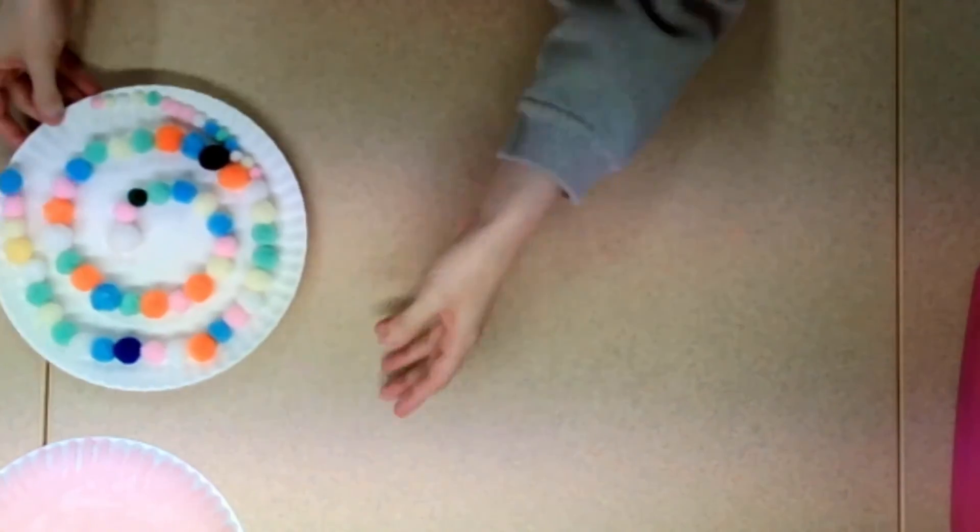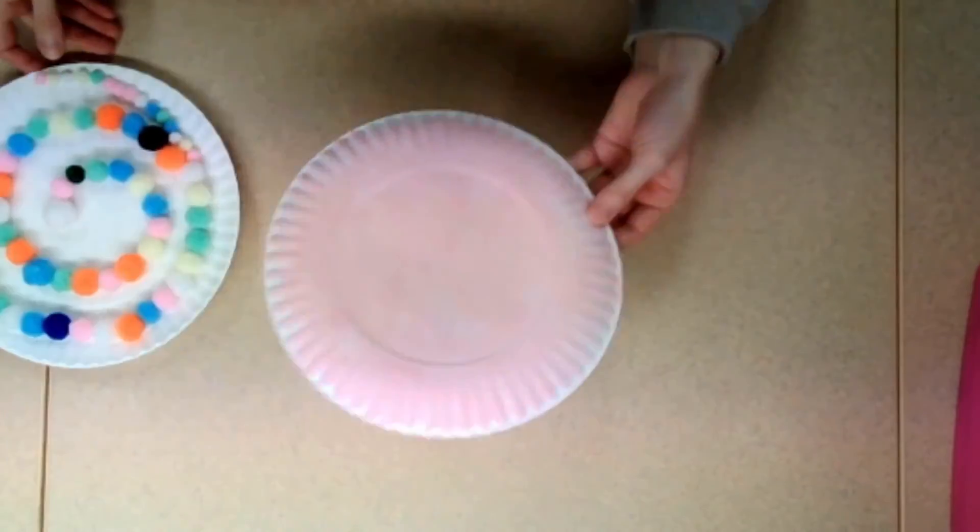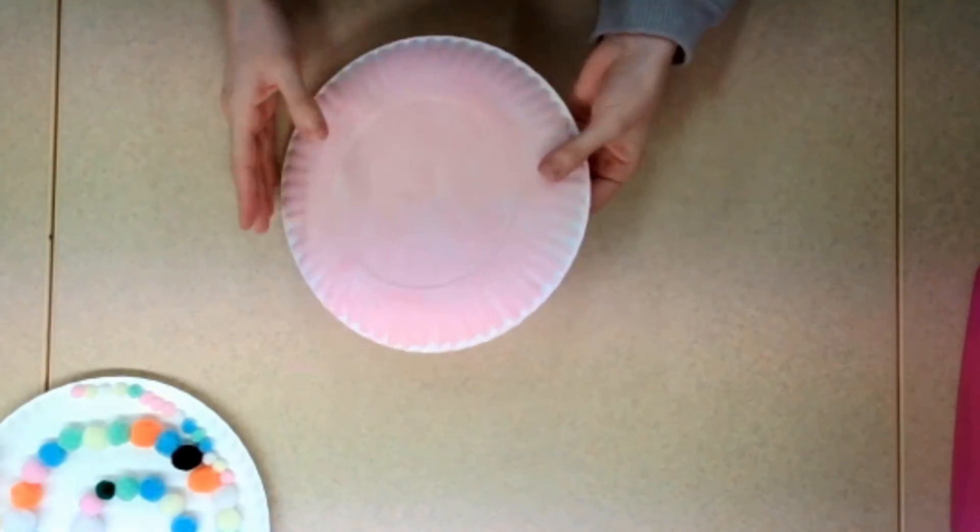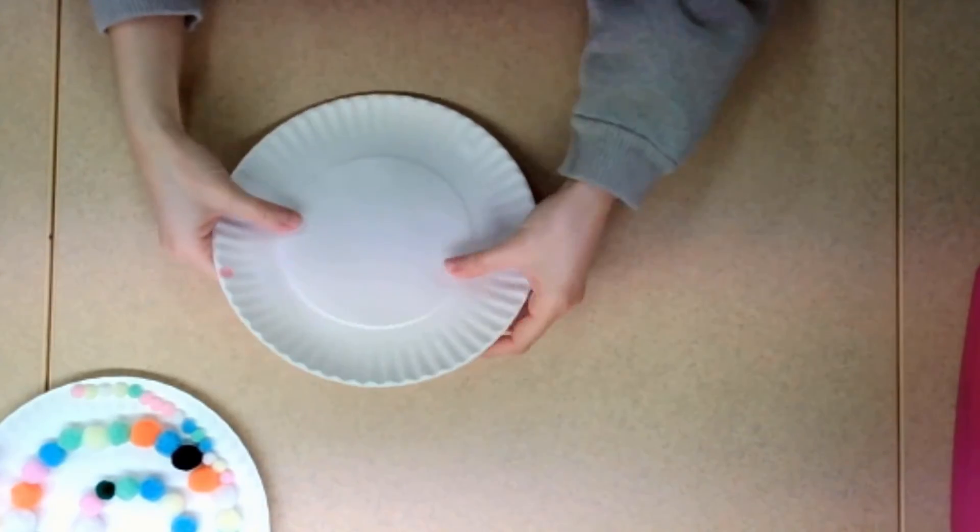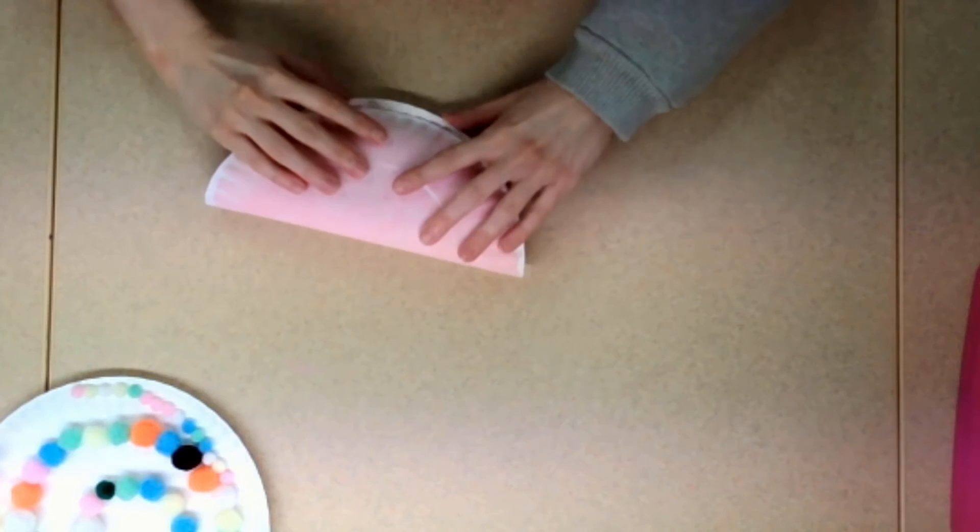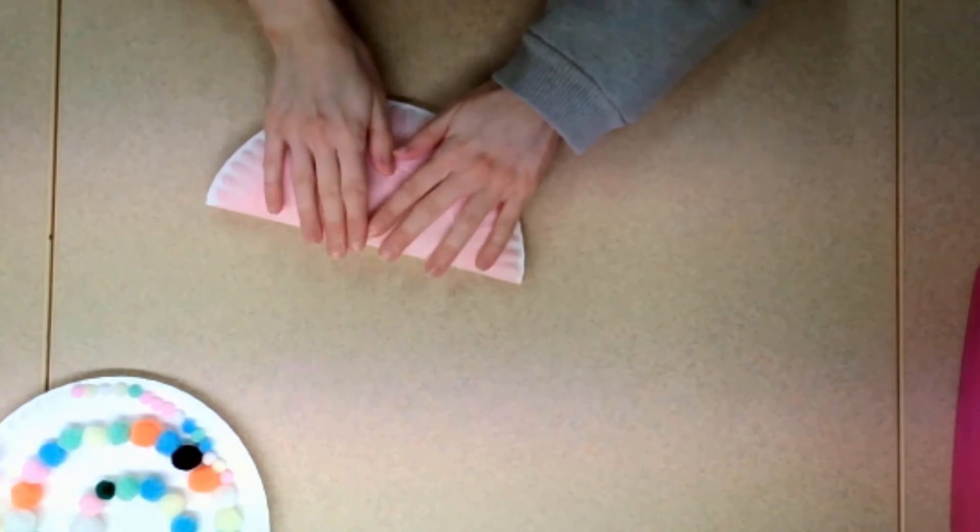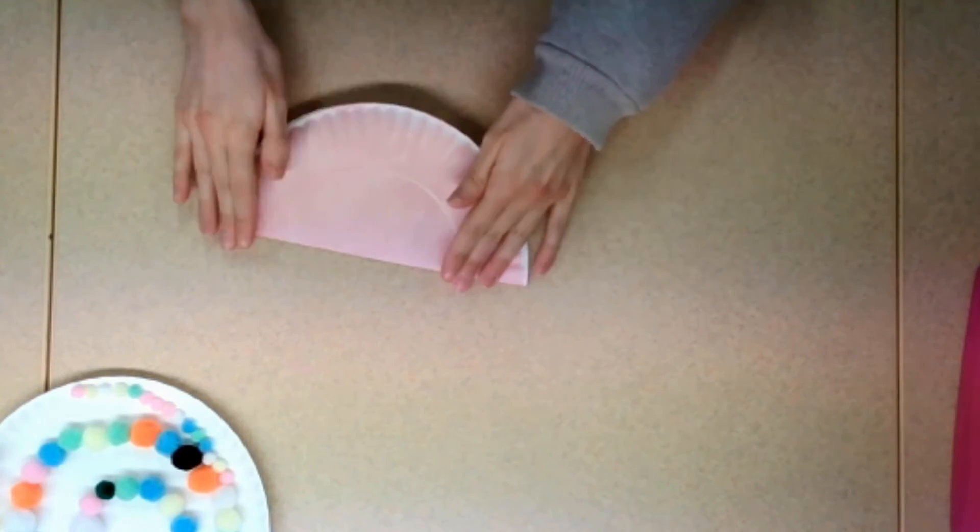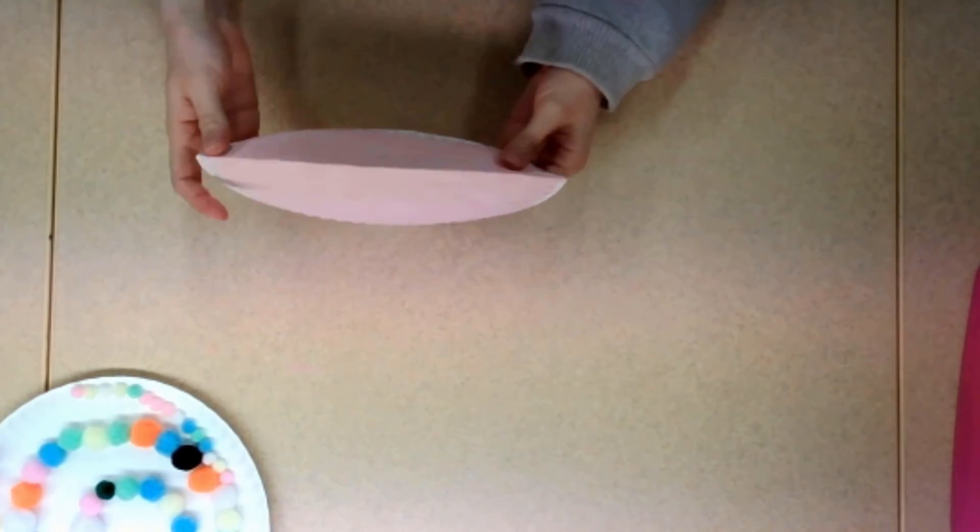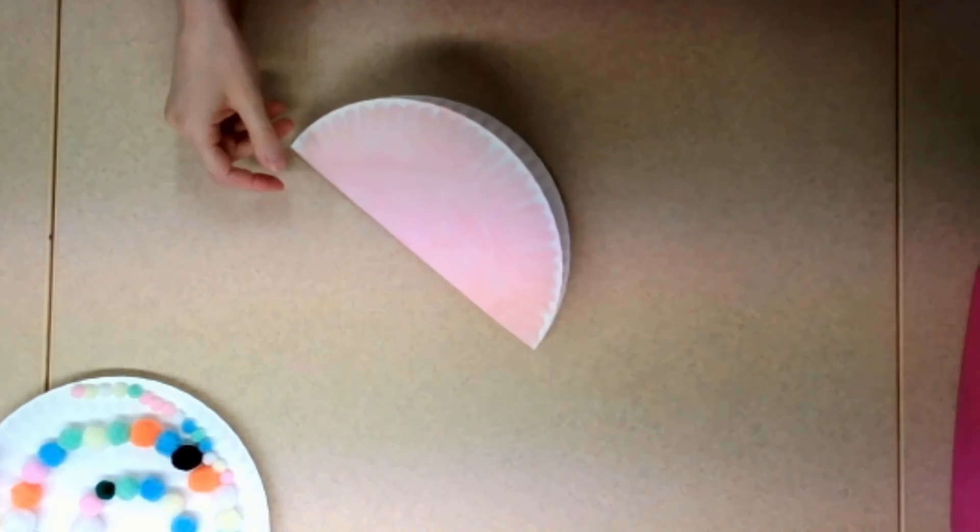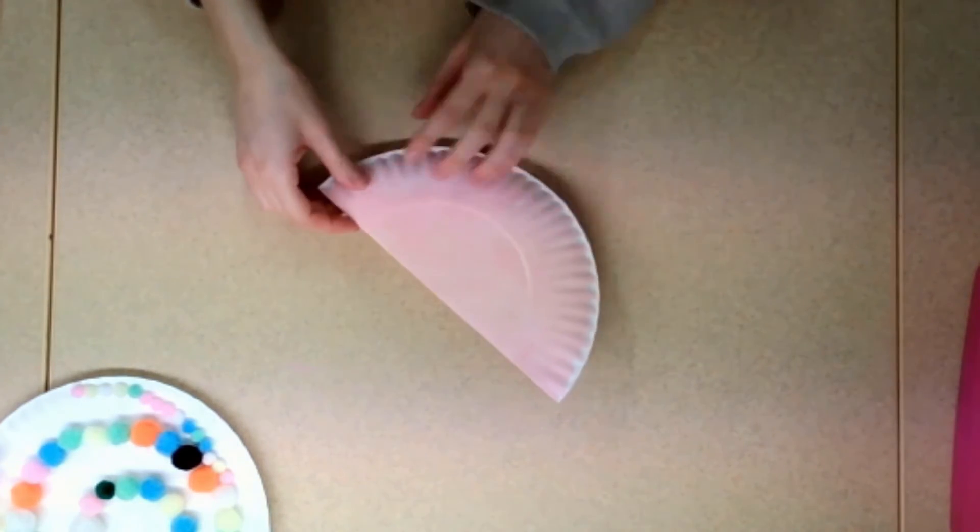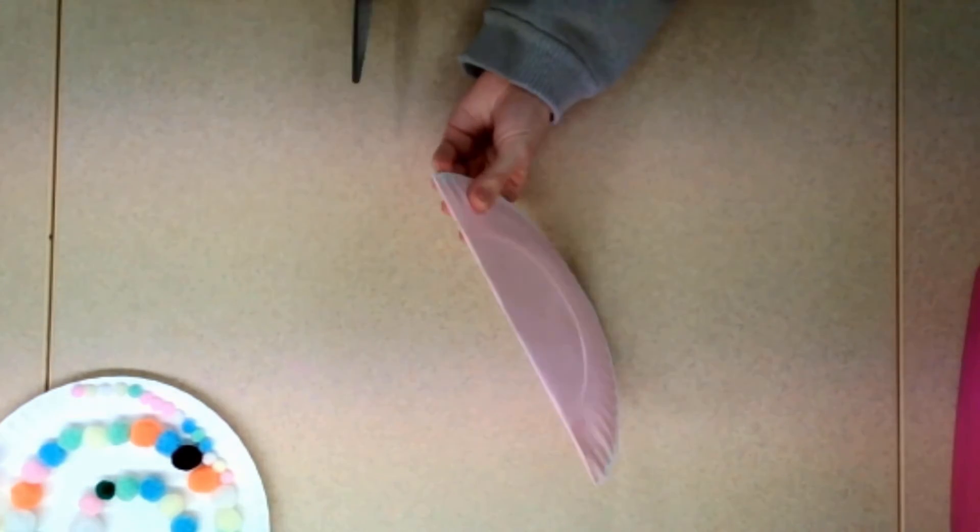Alright, now we're going to set that aside. If your colored plate is dry, fold it in half. With help from an adult, cut out two holes along the folded crease.